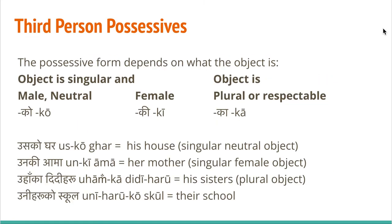The general form: the possessive depends on what the object is. If the object is singular and male or neutral, we use 'ko'. If the object is female, we use 'ki'. If the object is plural or respectable, we use 'ka'. So 'usko ghar' means 'his house' because the object is singular and neutral. 'Unki aama' means 'her mother' or 'his mother' — singular female object. And 'wahan ka didiharu' means 'his sisters' or 'her sisters'.